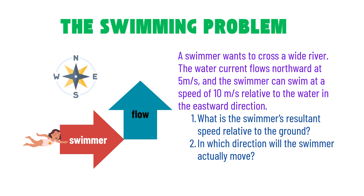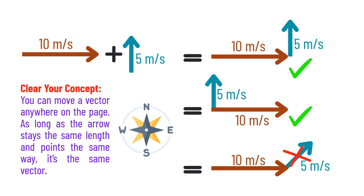Let's solve it step by step. Draw the two arrows — the vectors. Draw the swimmer's velocity: 10 meters per second to the east. Draw the river current: 5 meters per second to the north. These two arrows are perpendicular — that is, the angle between them is 90 degrees.